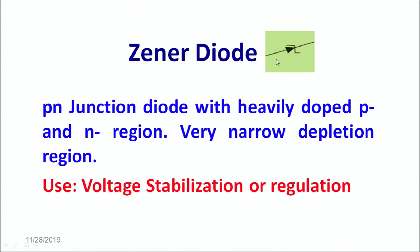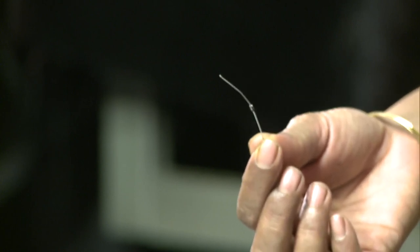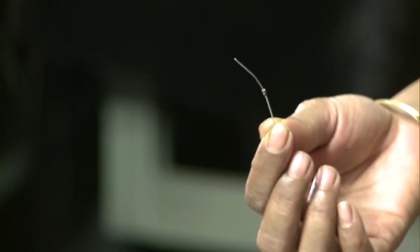This is the symbol of the zener diode. A zener diode typically works in reverse bias. Basically, a zener diode is a p-n junction diode with heavily doped p-n region. It has a very narrow depletion region and is mainly used for voltage stabilization or regulation. Here is the zener diode which is used in reverse bias — it acts like a voltage stabilizer or voltage regulator.